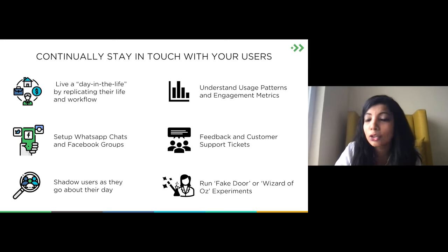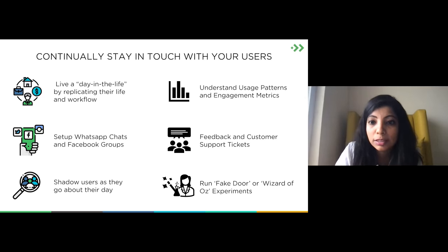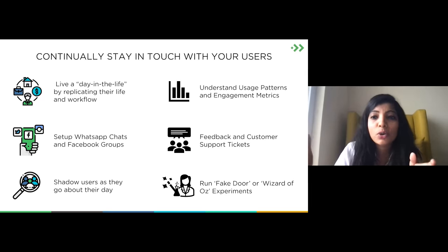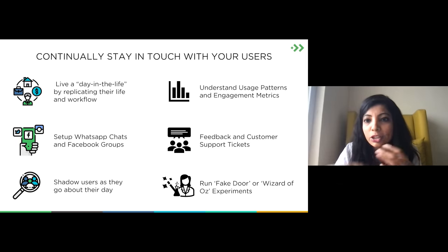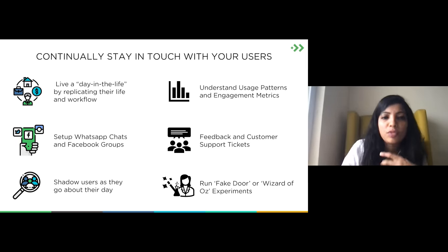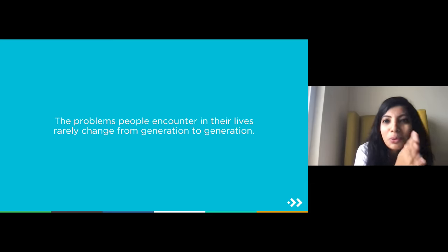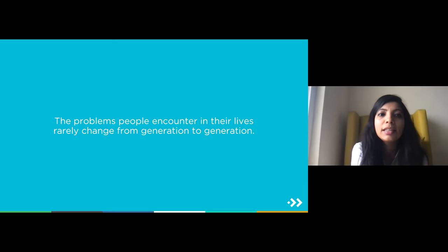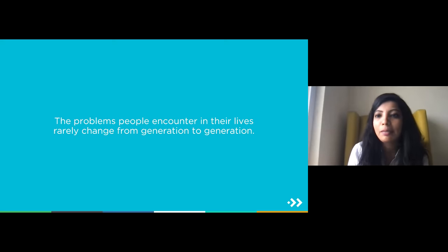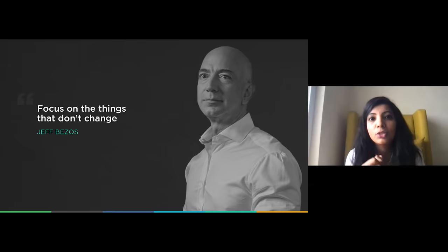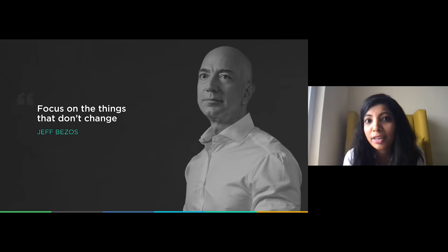Look at customer support tickets and engagement metrics to understand user personas and what users respond to. One approach I particularly like is running fake-door experiments — you pretend to have a product and run it via a Facebook ad to see if the communication lands and if users act on it. Having clarity on the problem you're solving is the single biggest driver of alignment; it helps everybody grow in the same direction and land your product and company. As you build, remember: the hero in this journey is your user or the customer — not the product.